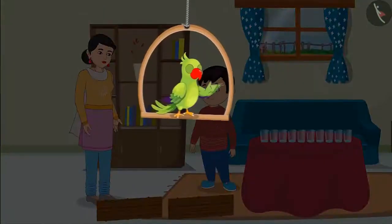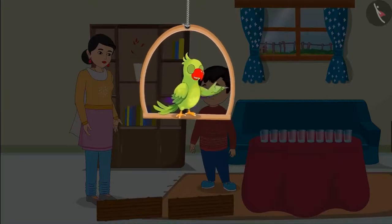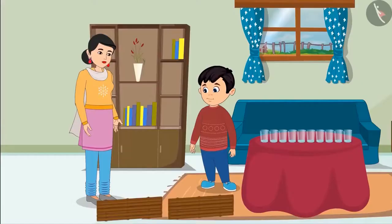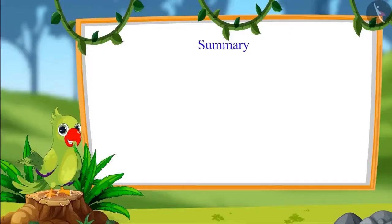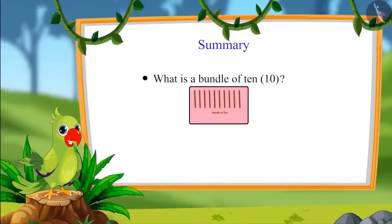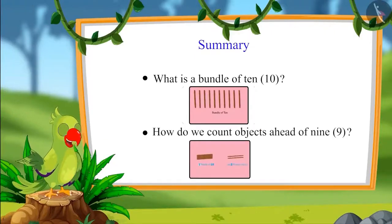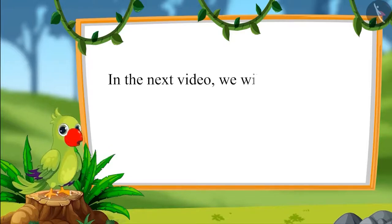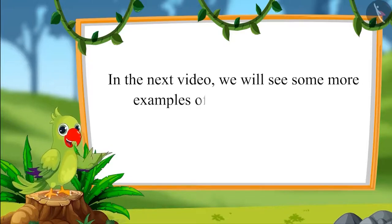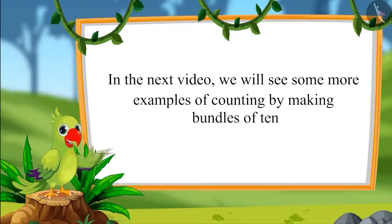Now go and wash your hands. You also count the number of objects around you by making bundles of 10. So children, that was all for today. In this video, we learnt what is a bundle of 10 and how to count objects ahead of 9. In the next video, we will see some more examples of counting by making bundles of 10. Till then, bye friends.